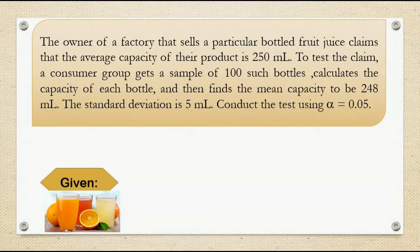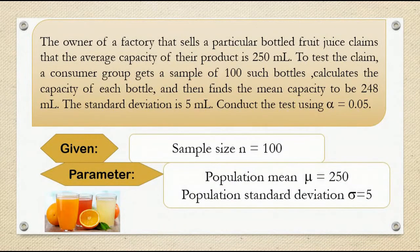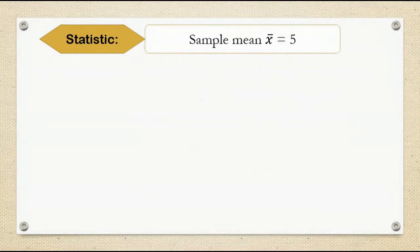Given: sample size n is equal to 100. Parameter: population mean mu is equal to 250. Population standard deviation sigma is equal to 5. Statistic: sample mean x-bar is equal to 248.